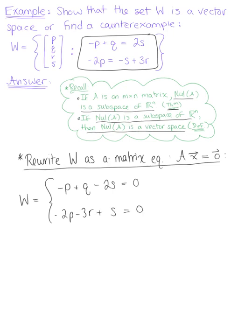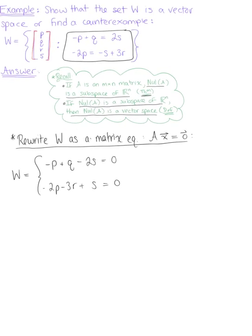Before we go ahead and put this into its matrix equation form, I want you to remember the vector. So our vector PQRS has four components, so it can be helpful to keep yourself straight.